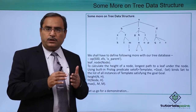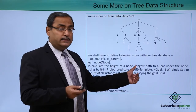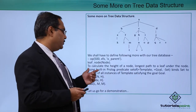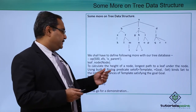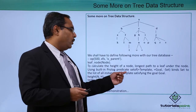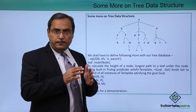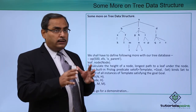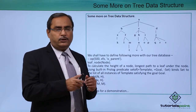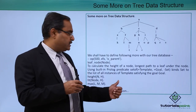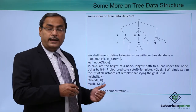We shall go for the declaration of the leaf node predicate, which will take a node as input argument, to calculate the height of a node — that is the longest path to a leaf under the node. Using the built-in Prolog predicate `setof`, which takes a template, goal, and binds set to the list of all instances of templates satisfying the goal. We shall also define other predicates like `height`, `ht`, and `max` for the implementation.